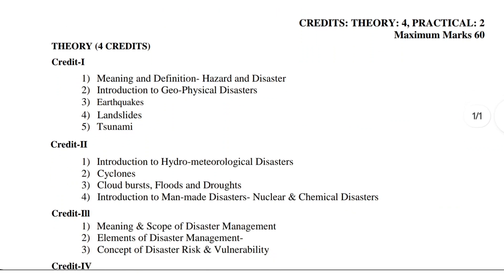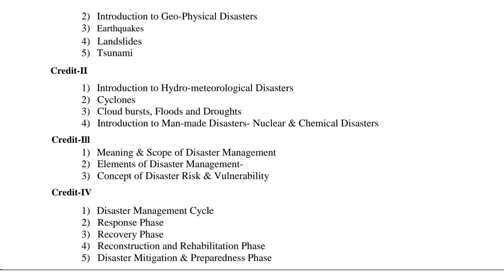In Credit 1 you have to study: first, meaning and definition of hazard, and meaning and definition of disaster; second, introduction to geophysical disasters; third, earthquakes; fourth, landslides; fifth, tsunami. Earthquakes, landslides, and tsunami are geophysical disasters.